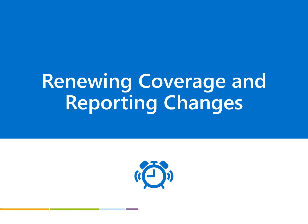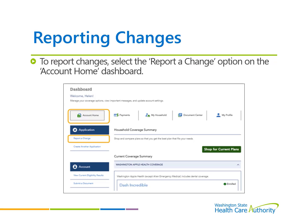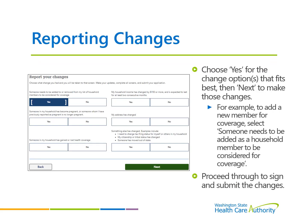This section will go over how to renew coverage and report changes to the household. When there is a member of the household that is due for renewal, the option to update application and renew coverage will show under the client's Account Home Dashboard. This will take you to the Application Review page where changes can be made and then e-signed and submitted for a renewal determination. If there are changes that need to be reported before renewal is due, select the Report a Change option located on the Account Home Dashboard under the Application Quick Link. After selecting Report a Change, choose Yes for the change option that fits. Then Next will take you to the page in the application where the change is reported. Proceed through the rest of the application to sign and submit the changes.